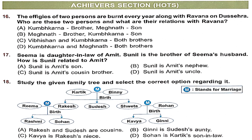Achievers section HOTS. Question 16: The effigies of two persons are burned every year along with Ravana on Dussehra. Who are those two persons and what are their relations with Ravana? It is Option A — Kumbhakaran, Ravana's brother, and Meghnad, Ravana's son.